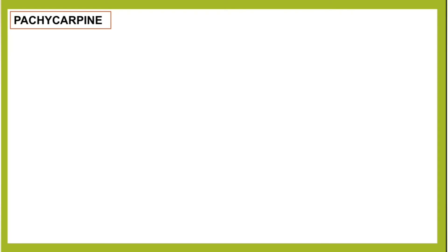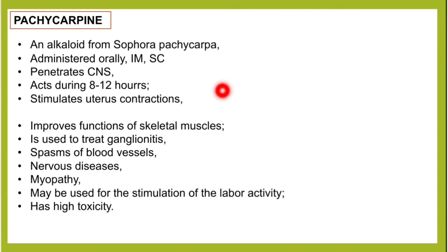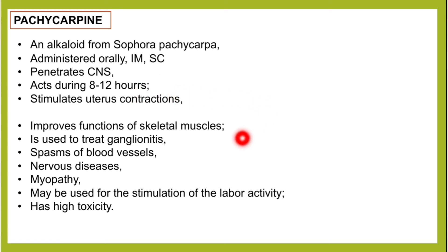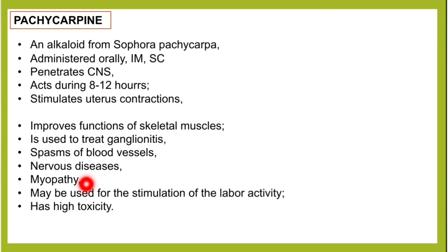Pachycarpine is an alkaloid from Sophora pachycarpa, a plant. It is administered orally, intramuscularly, or subcutaneously. It has the ability to penetrate the central nervous system and acts for 8 to 12 hours. This drug stimulates uterine contractions, improves the functions of skeletal muscles, and is used to treat ganglionitis, spasms of blood vessels, nervous diseases, and myopathy. It may also be used for stimulation of labor activity, but has high toxicity.